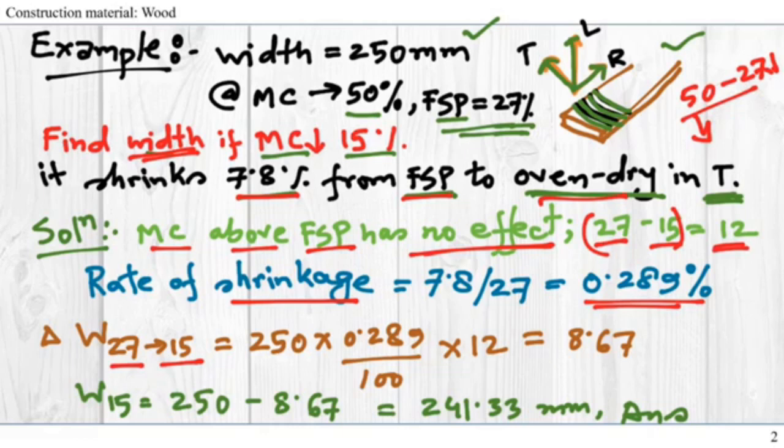We'll take the rate of shrinkage, which is this one. From percentage I divide by 100 so now it's original. Then we take the change in moisture content from FSP to dry, so that is 12.